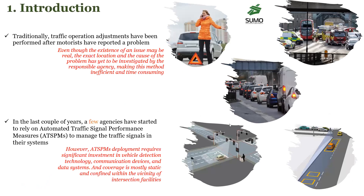The problem at hand is that traditionally, any incident occurring on the road has been reported by traffic users — they call the police, and then traffic management centers will respond later. This procedure has proven to be time-consuming, and mitigation measures are not implemented early. As of late, there have been various automated signal performance measures developed from static detector-based systems, as seen in the pictures here.